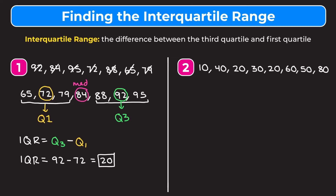We want to start by writing these numbers from least to greatest: 10, 20, 20, 30, 40, 50, 60, 80. This time we have eight terms, so our median is going to be between the middle two terms — between 30 and 40. The middle of 30 and 40 is 35. Technically we don't need the median to find the IQR, but it's good to review.